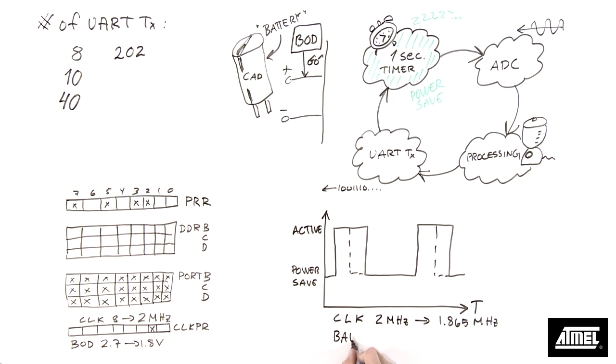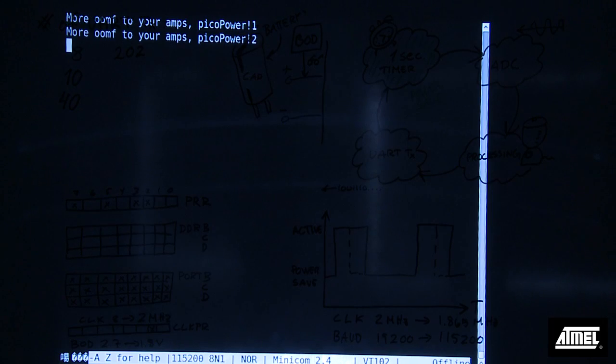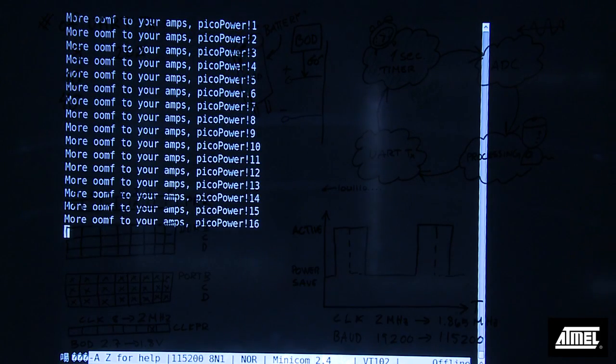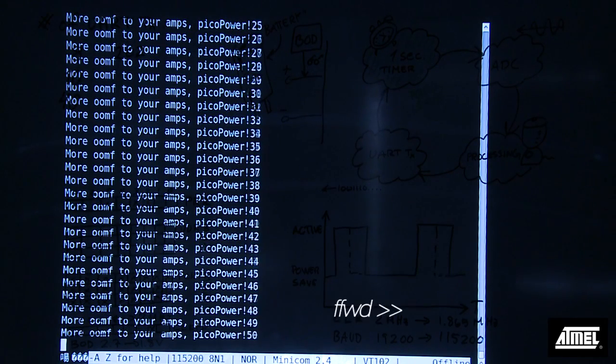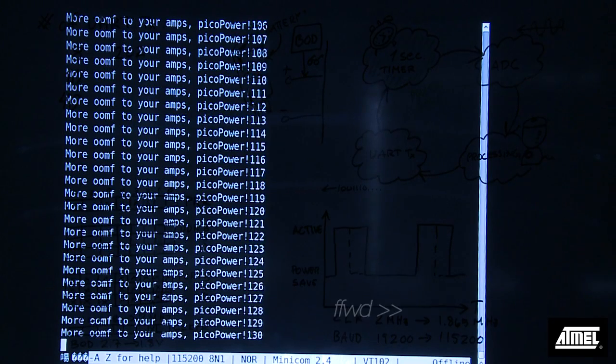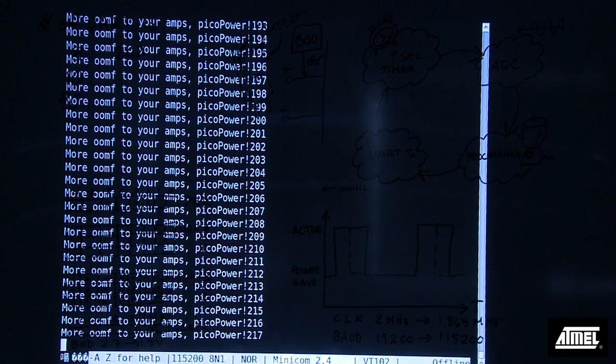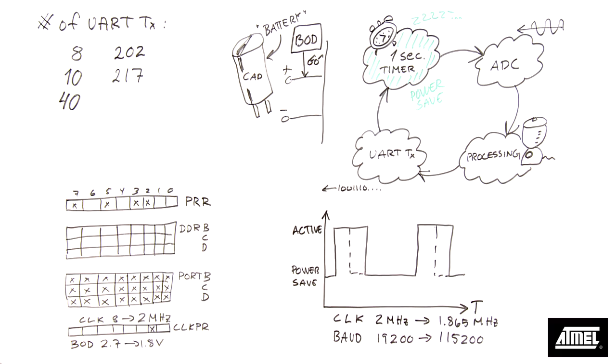This frequency allows us to use a 115,200 baud rate, so we spend less time in active mode before going to power save. Another 7.5% increase, not bad.